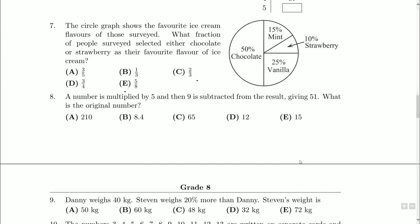A number is multiplied by five and then nine is subtracted from the result giving 51. What is the original number?